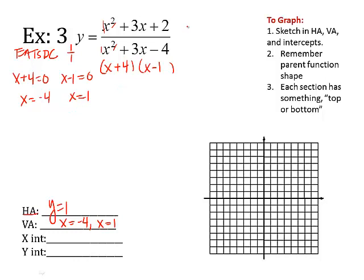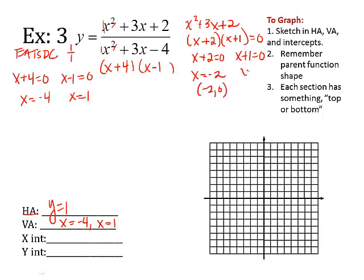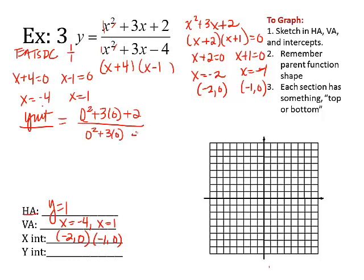X intercepts. Set the top equal to 0 and solve it. Well that means I need to factor it. If I factor this I get x plus 2, x plus 1. So I have to set each factor equal to 0 and find those x coordinates. X is negative 2. So that means I have an intercept at negative 2, 0, and negative 1. So negative 1, 0. To do y intercepts remember I take all the x's and make them 0. So 0 squared plus 3 times 0 plus 2 over 0 squared plus 3 times 0 minus 4. So I have 2 over negative 4 which is negative 1 half. So it crosses the y axis at 0, negative 1 half.